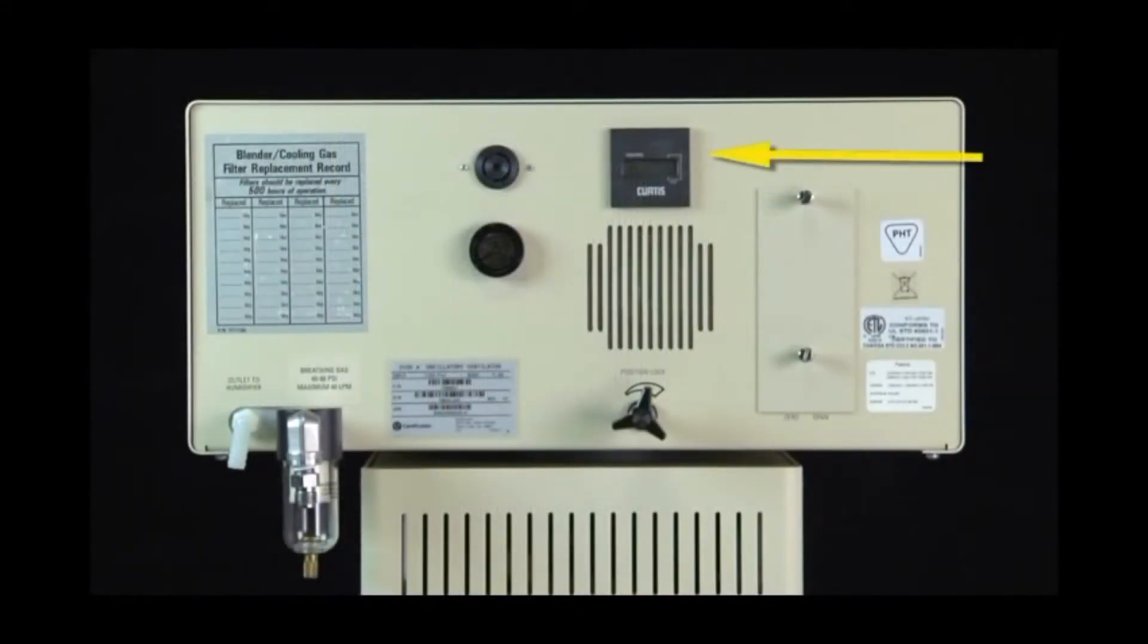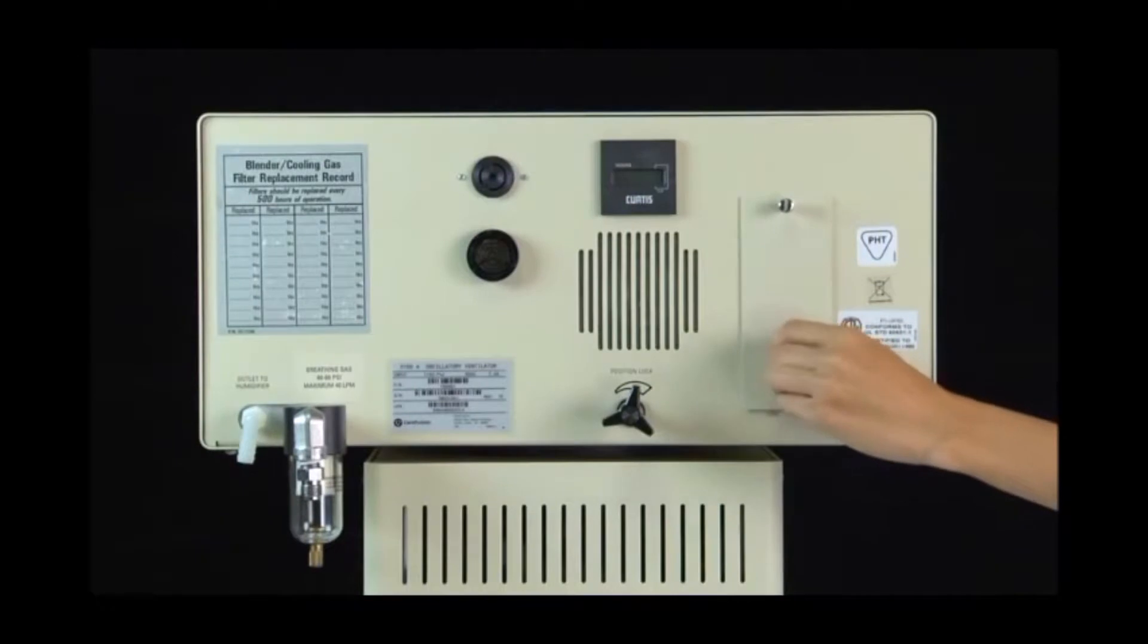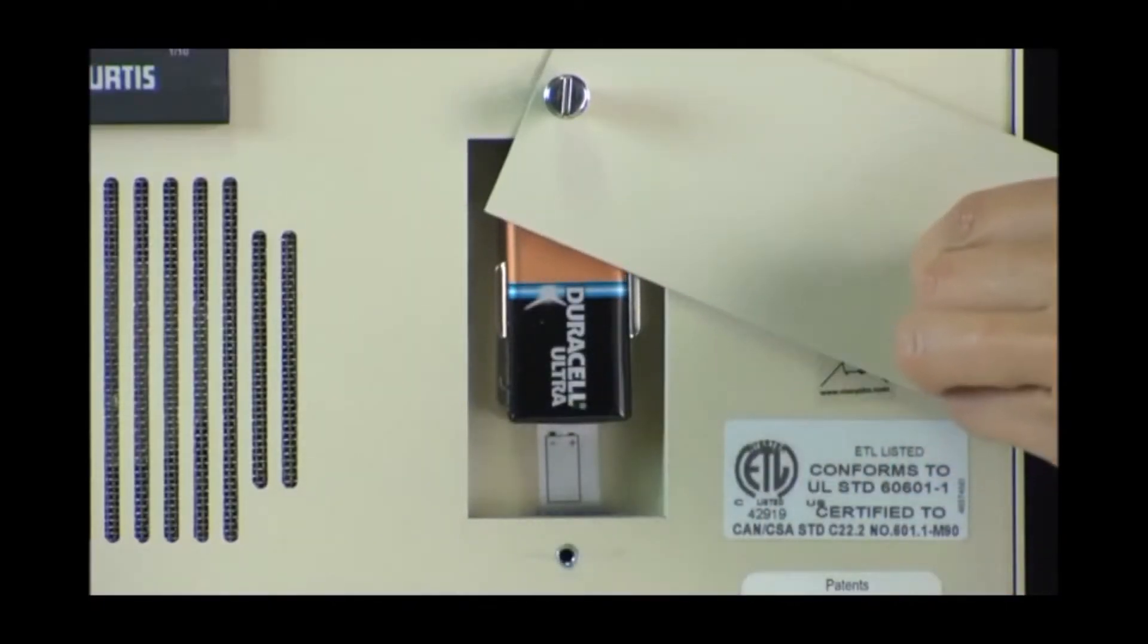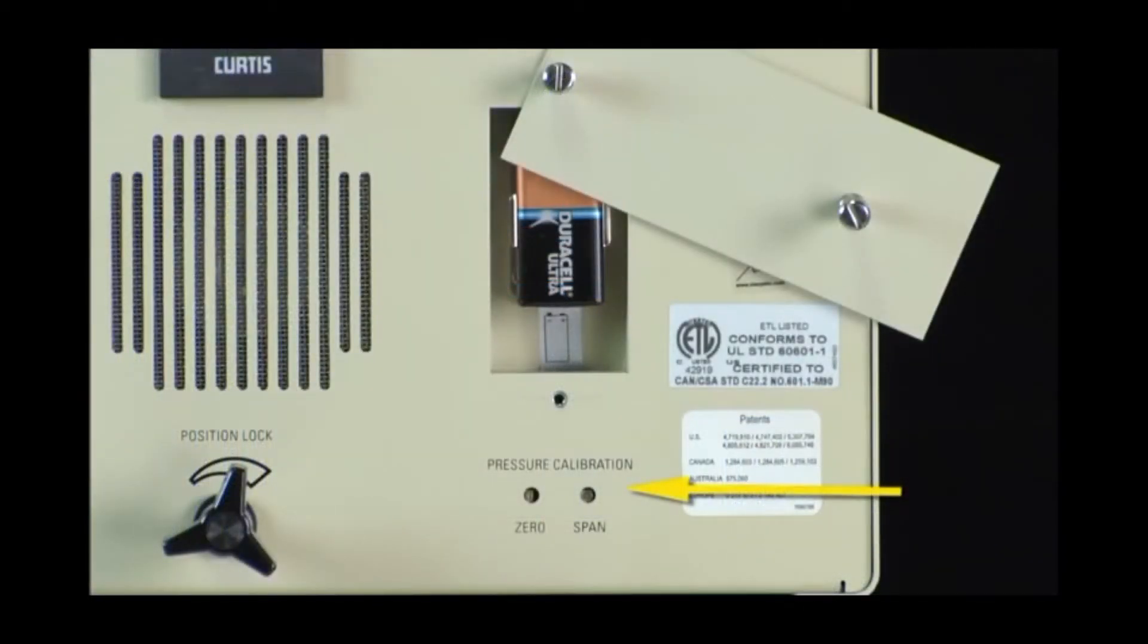The elapsed time meter indicates the total time in hours that the ventilator has been in use. This compartment houses a 9-volt alkaline battery, which powers an audible alarm in the event of power loss to the instrument. The adjustment points for calibration of the airway pressure monitor transducer are located here. You should refer to the instructions included in your service manual for this calibration procedure.